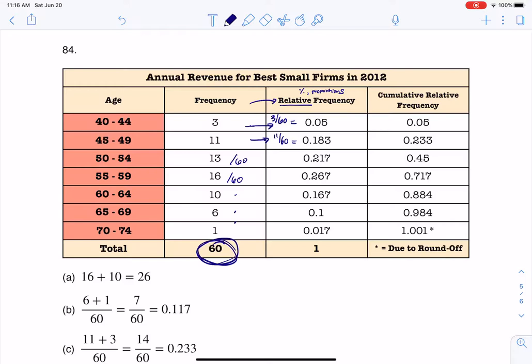And then again, I always like to just take a little check and say, did that total out to 1? And it should because we should have 100% of our data accounted for.